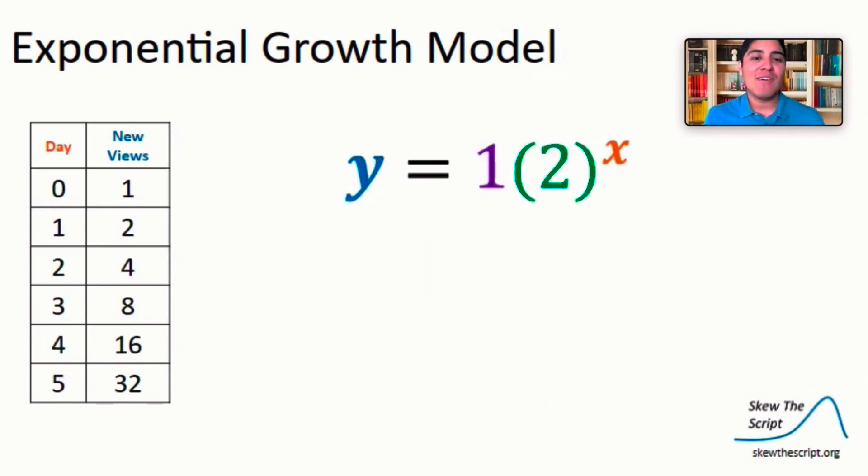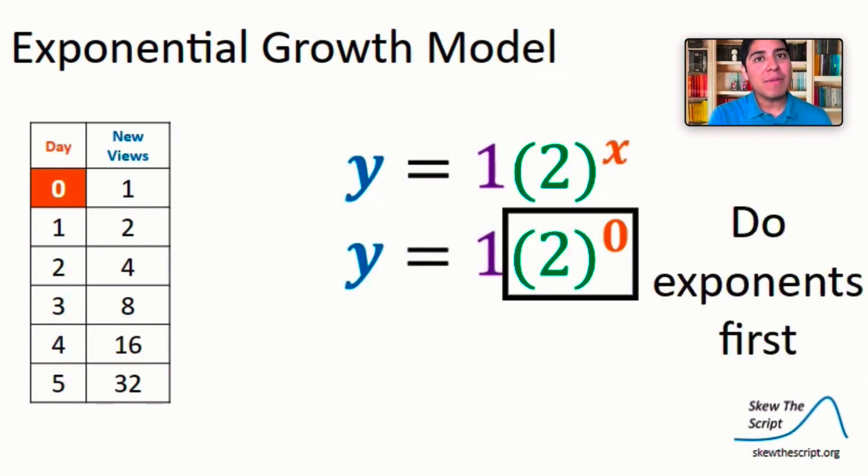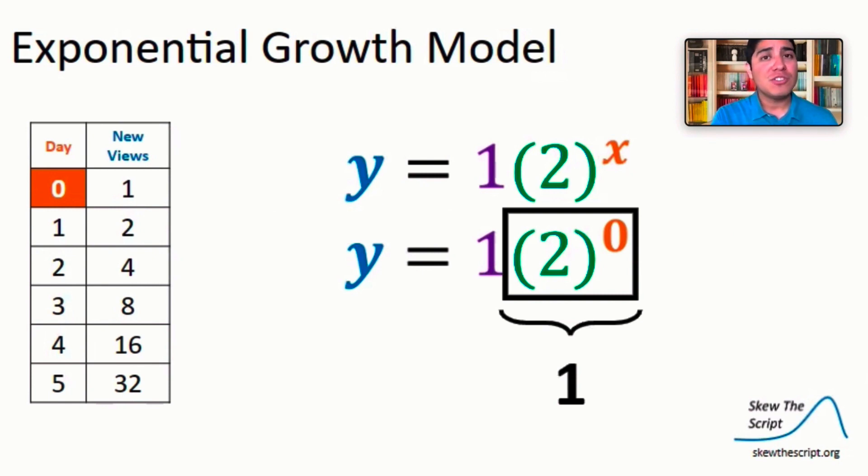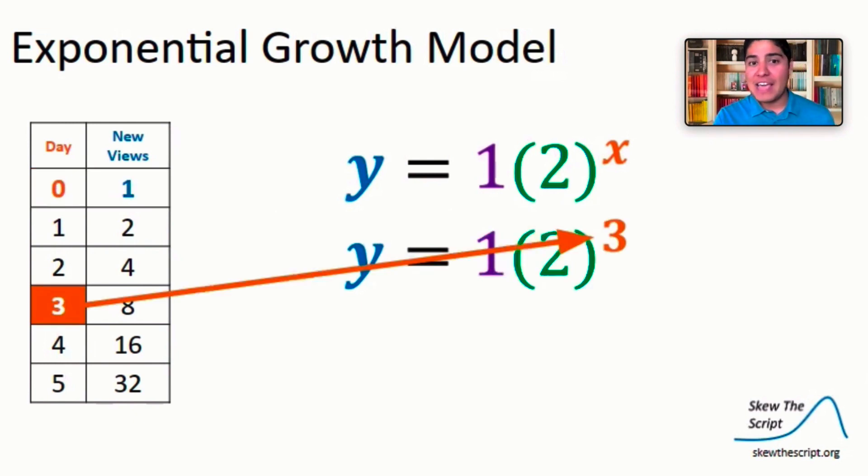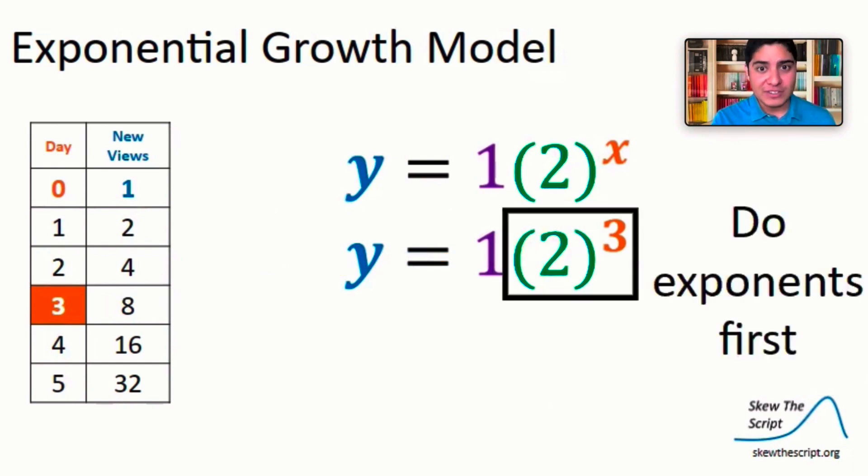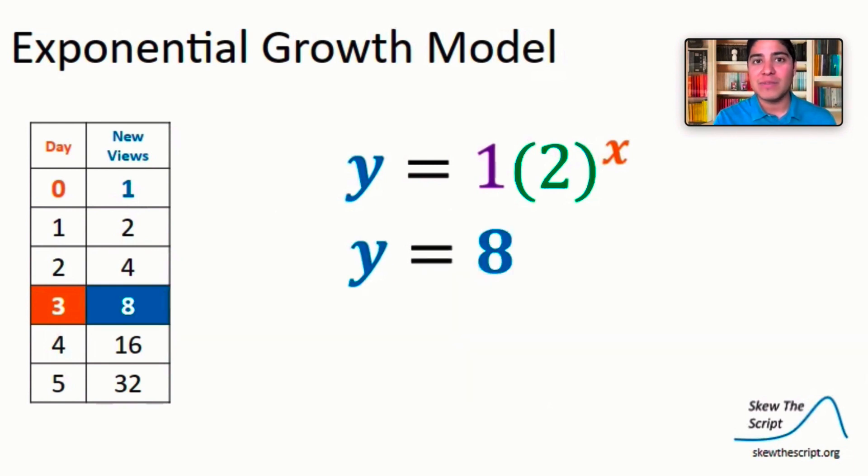So we finally have our model. Let's test it out with some points from the table and make sure it works. So when x is zero, we have y equals one times two to the zero power. Let's start by doing the exponents first. Well, two to the zero power is just equivalent to one. And one times one will give us one. Let's try this when x equals three. So again, we'll start by doing the exponents first. And two to the third power is just two times two times two, which we know is eight. And one times eight will give us eight.